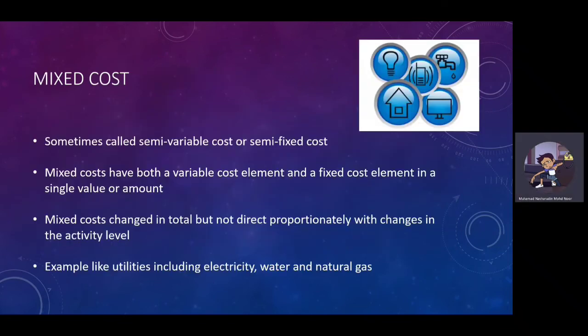The last one is Mixed Costs. Sometimes mixed costs are called semi-variable costs or semi-fixed costs. Mixed costs have both a variable cost element and a fixed cost element in a single value or amount. Mixed costs change in total but not in direct proportion when the activity level changes. Examples include utilities such as electricity, water, and natural gas. That's all for me, thank you so much.